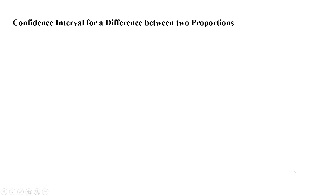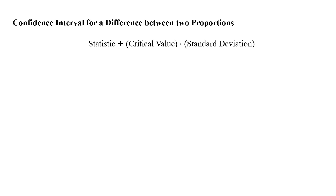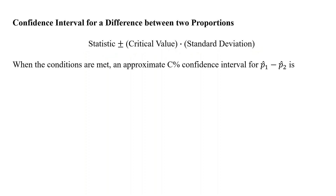That sampling distribution leads us into creating a confidence interval for a difference between two proportions. Remember the skeleton for a confidence interval is: statistic plus or minus critical value times standard deviation. Our statistic is the center of our sampling distribution, our critical value is z*, found the same way as always in this unit, and our standard deviation becomes the standard error because we don't know the true population value — we use sample data to estimate it.